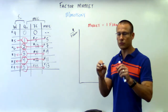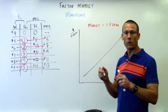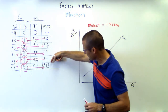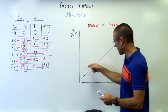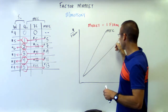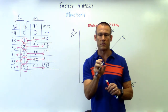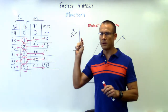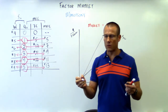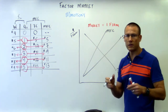On the graph we have supply of labor — upward sloping — and MFC above it, broken away from supply. Now for the marginal revenue product: remember, that's just the demand for labor, and it's always downward sloping. Demand for labor is the marginal revenue product of labor. Now we've got our full monopsony graph.